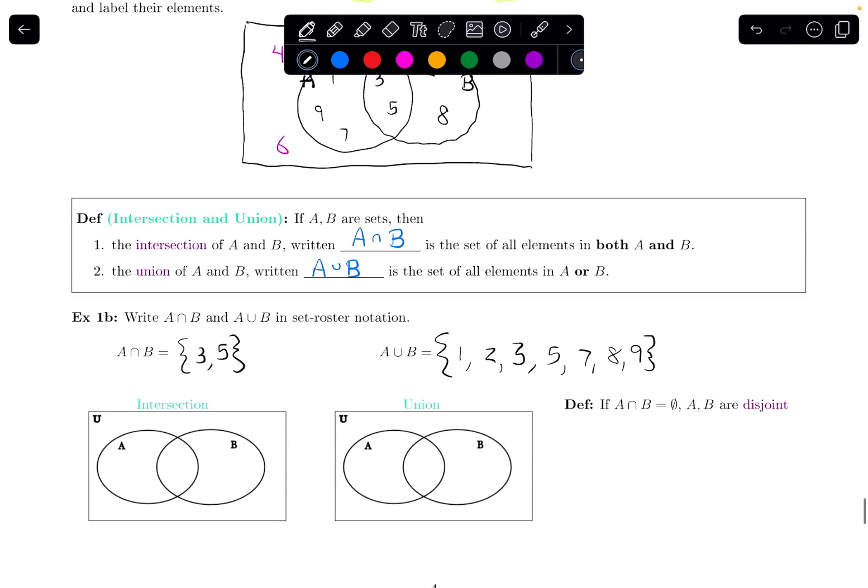Visually, we can describe the intersection and union as thinking of two circles for my sets, A and B, within my universal set, U, this rectangle. The intersection, the stuff that's in both of them, is just the overlap. So the intersection is the overlap right here.